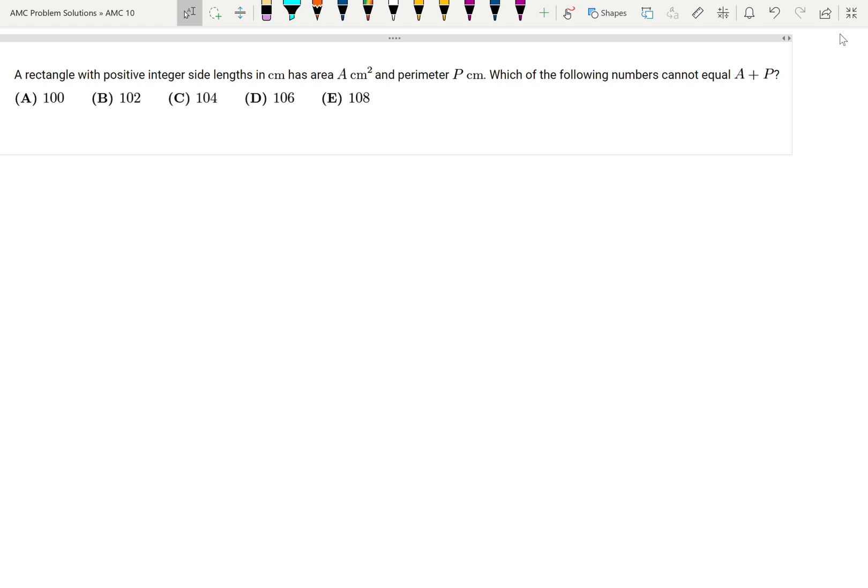A rectangle with positive integer side lengths in centimeters has area A cm² and perimeter P cm. Which of the following numbers cannot equal A plus P?